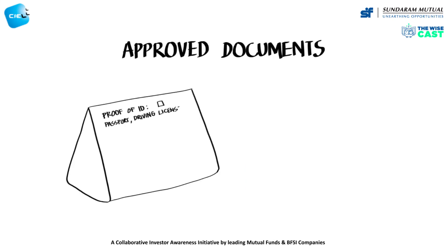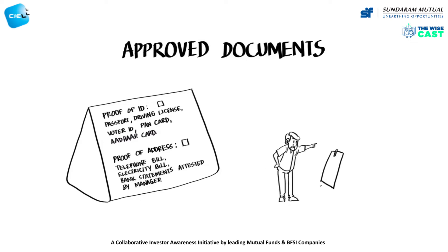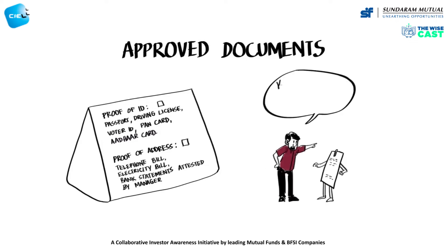Passport, driving license, voter ID, PAN card, and Aadhaar card are accepted as proof of identity. The same documents may carry the address too, but may not be the current one. In that case, address proofs in the form of utility bills from government agencies for telephone or electricity, or bank statements attested by the manager, are accepted. The documents for proof of address should not be more than three months old.